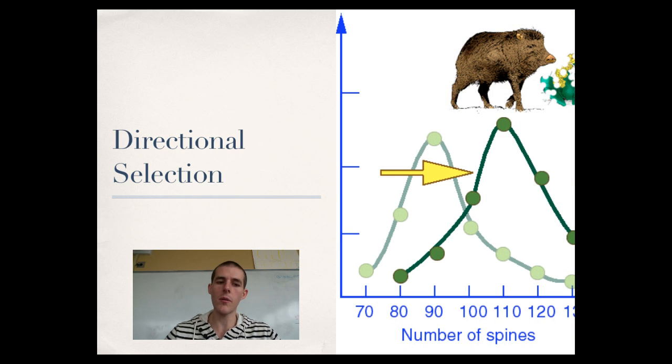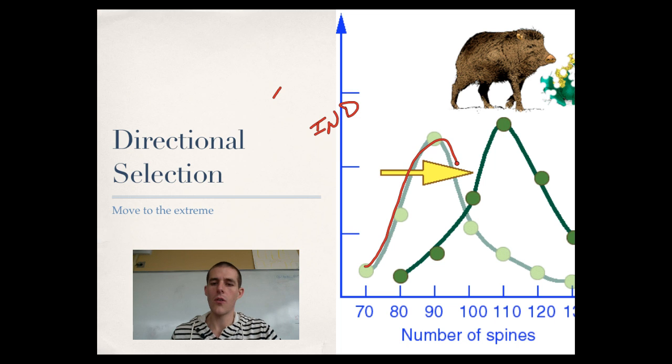There are three major types of selection. The curves on the right essentially show numbers in a population that have got a certain trait. We're talking about cacti. Up this axis is individuals, and we've got number of spines. Normally this population sits right here. That is the normal distribution of this population. You can see most of the individuals have got 90-ish spines, and then you've got a bell curve that goes along with that. In directional selection, there is some force that causes the population to move in one direction towards one extreme.